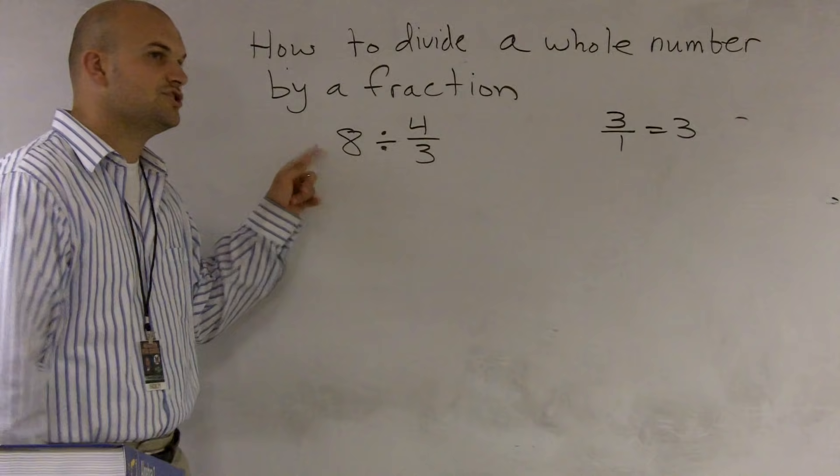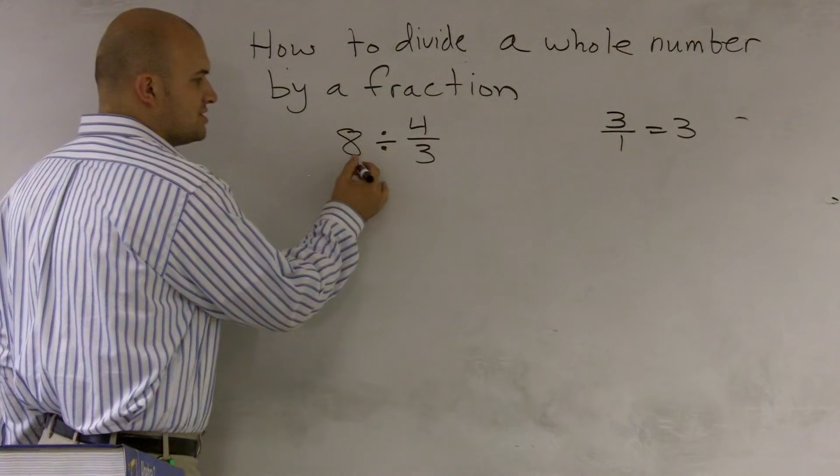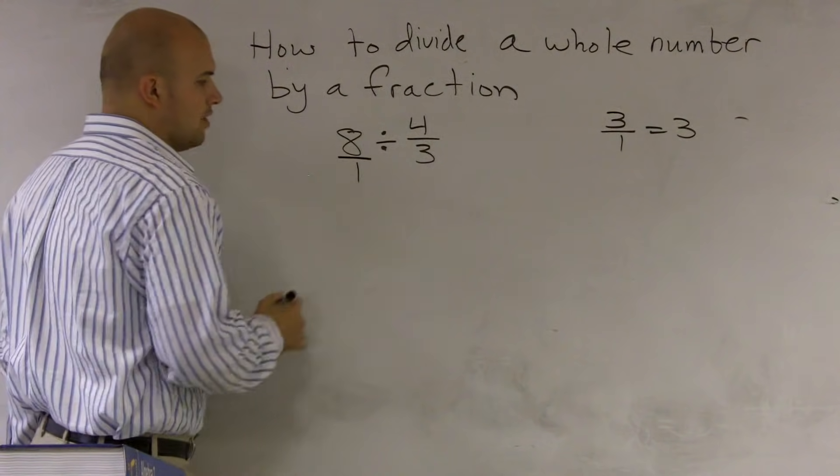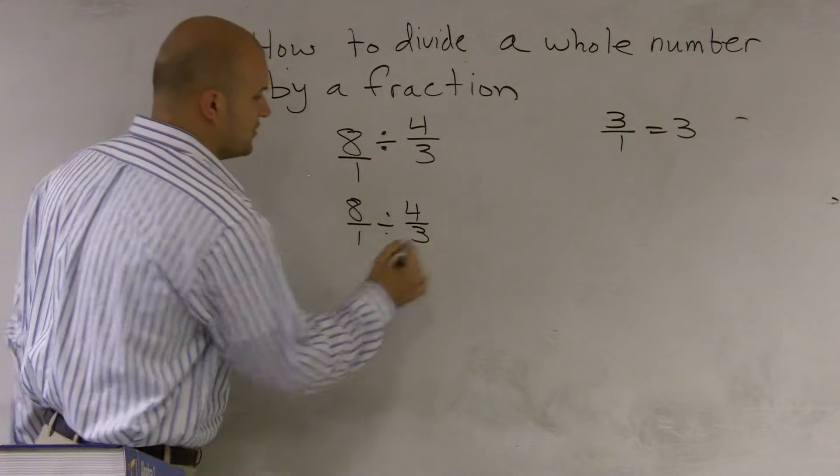So what I'm going to want to do is change this whole number into a fraction. And all I need to do is just put that over 1. So now I have 8 over 1 divided by 4 thirds.